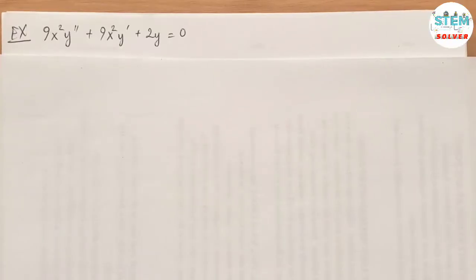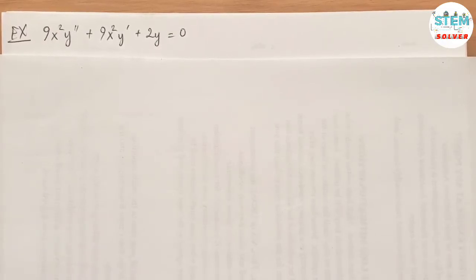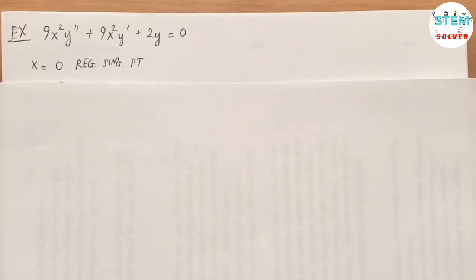We are using power series to solve a homogeneous differential equation: 9x²y'' plus 9xy' plus yy' equals 0, where x equals 0 is an ordinary regular singular point.